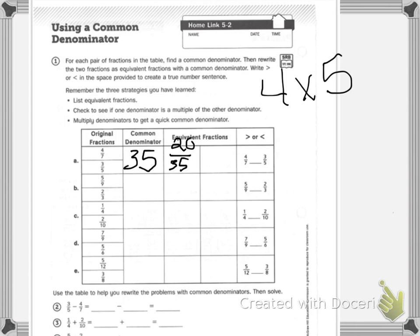Then I have 3 fifths, which if I change it to 35ths: 3 times 7, because 7 times 5 is 35, which equals 21.